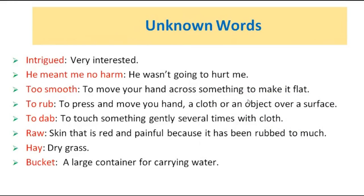Unknown words. Intrigued: very interested. He means me no harm: he wasn't going to hurt me. To smooth: to move your hand across something to make it flat. To rub: to press and move your hand, a cloth, or an object over a surface. To dab: to touch something gently several times with a cloth.